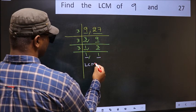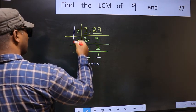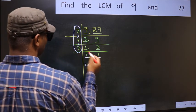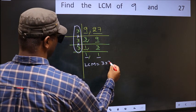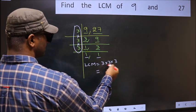So our LCM is the product of these numbers. That is 3 into 3 into 3. Let us multiply these numbers.